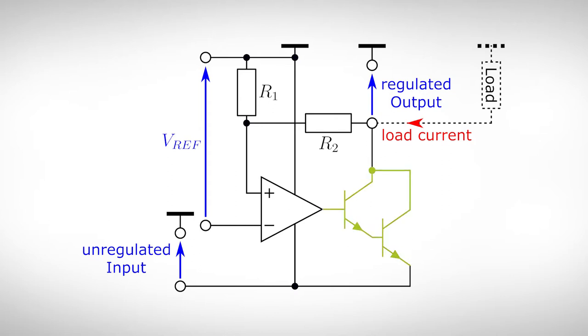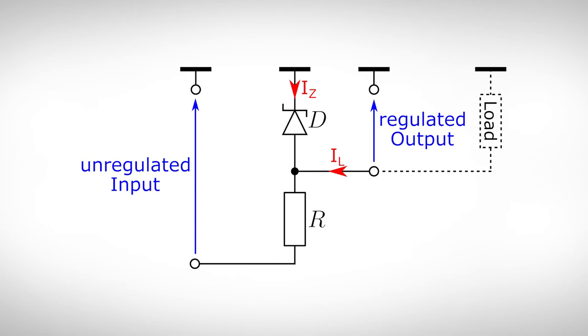We can again use a Darlington NPN transistor for that. The difference now is that the transistor is used in a common emitter configuration. For a Zener diode stabilization, it is even easier. We only have to turn the diode around and that's it.